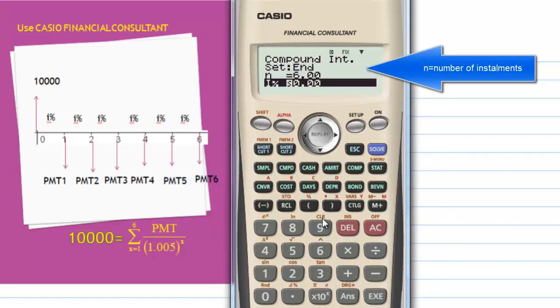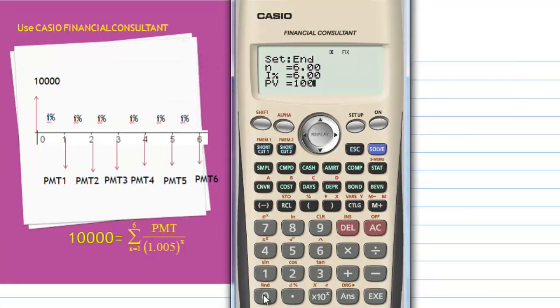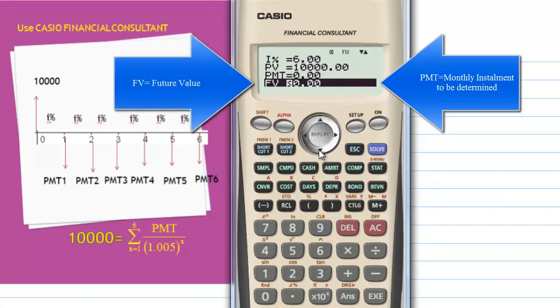And the annual interest rate is 6%. And the present value is $10,000. And the monthly payment we don't know yet, we're going to find. The future value is zero.